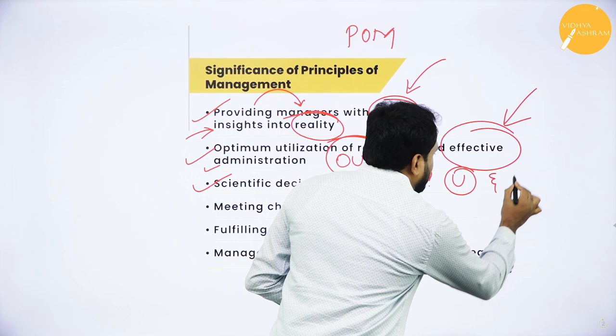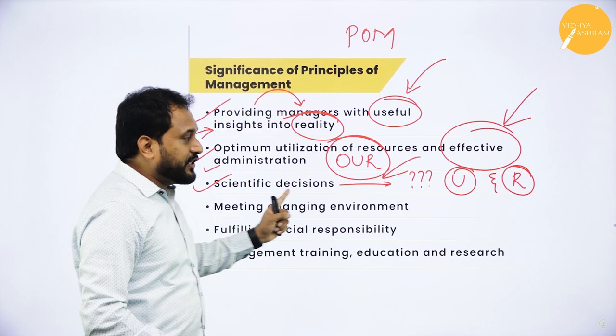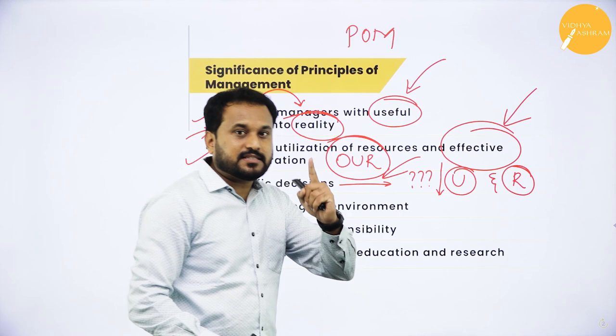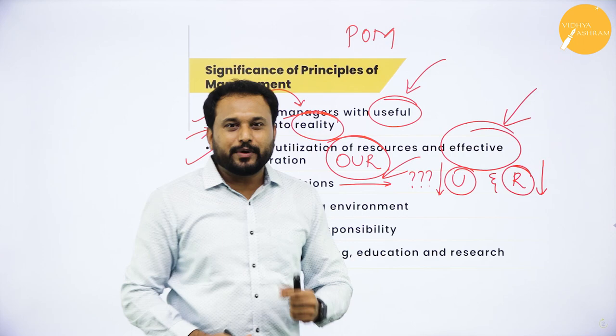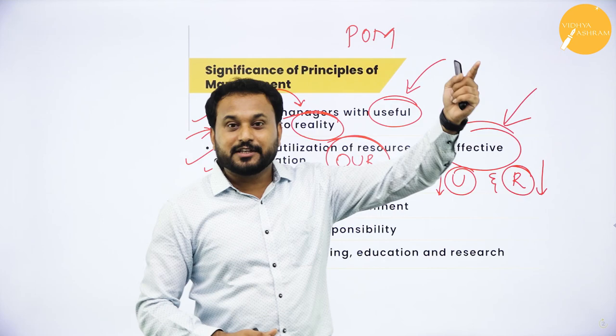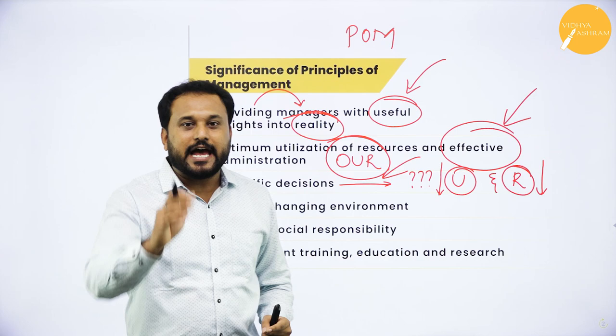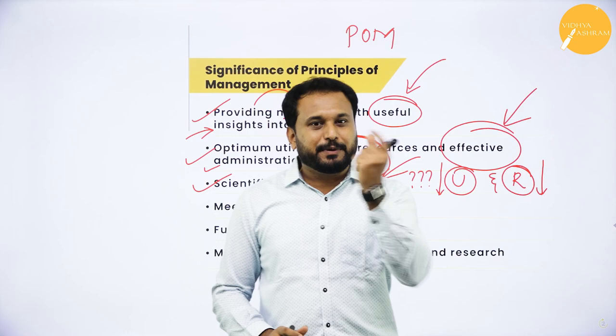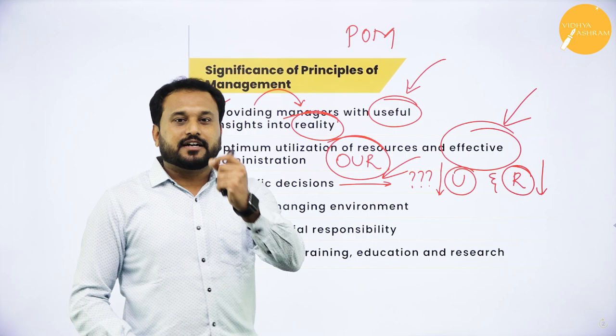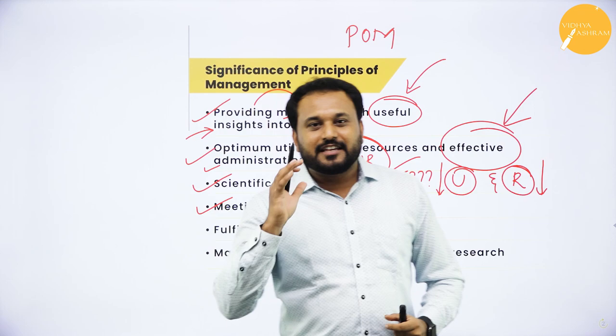There are two things: uncertainty and risk. Only through scientific decisions can you reduce uncertainty and reduce risk. If you go with thumb rules — whatever my father or grandfather used to do — in the 21st century it will not be applicable. Scientific decision means cause-and-effect relationship, experimentation, and practice.